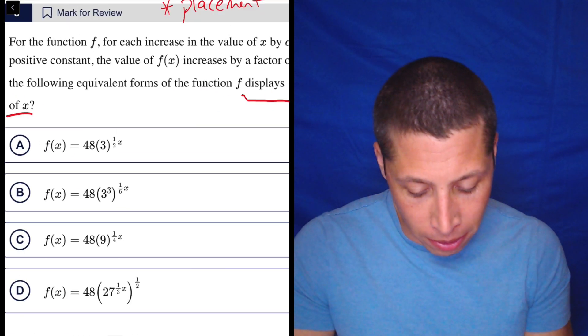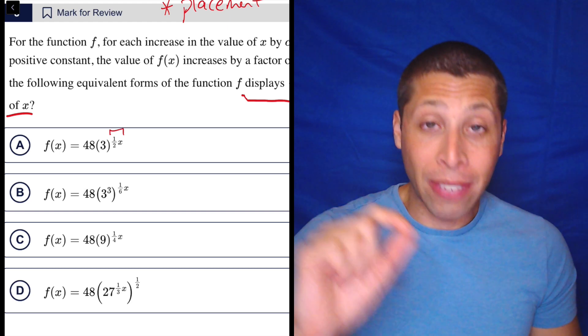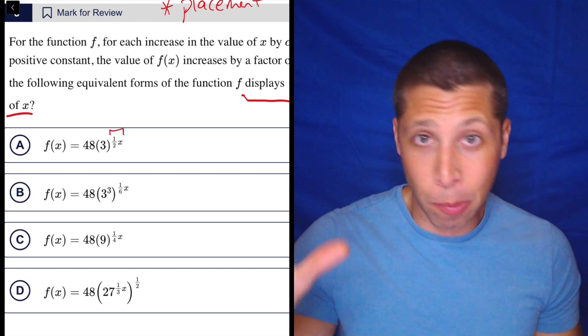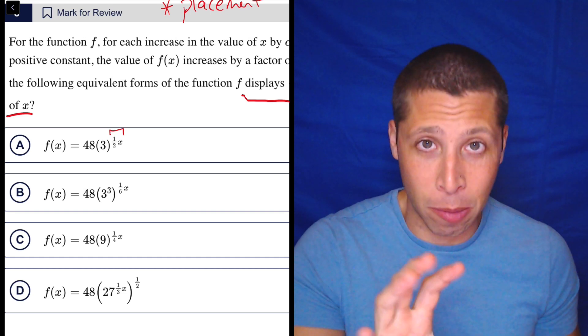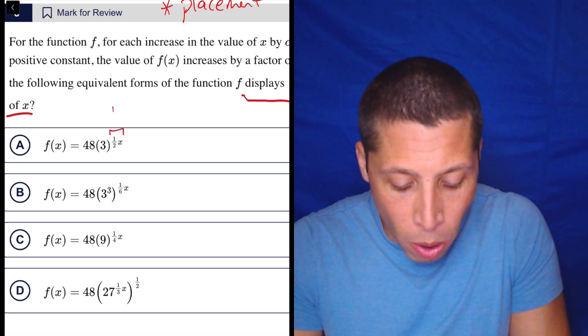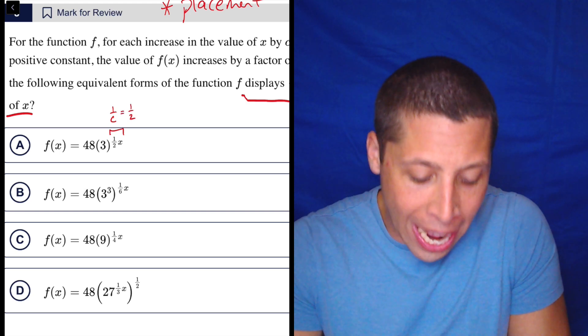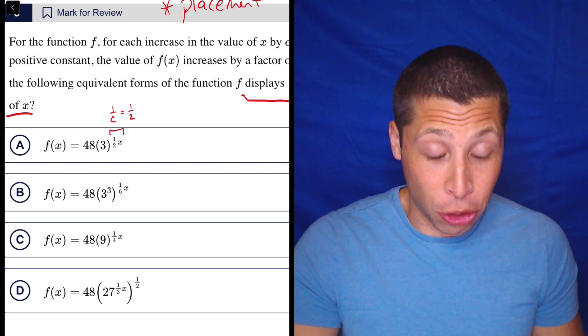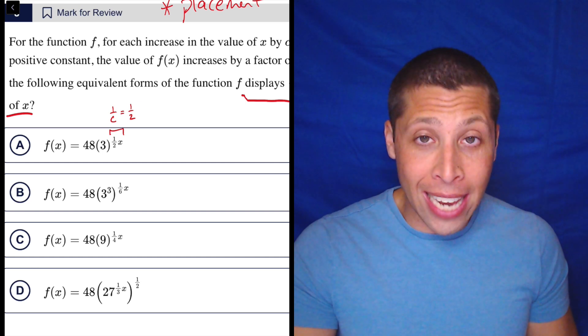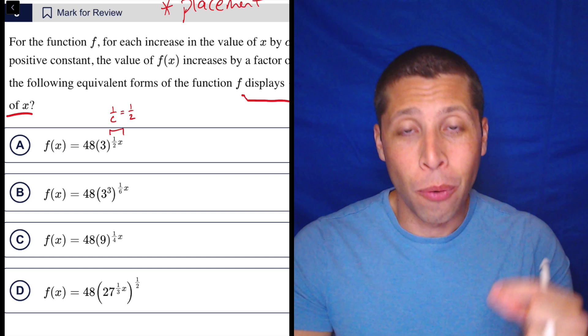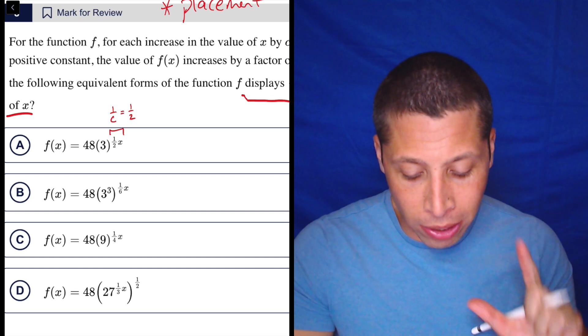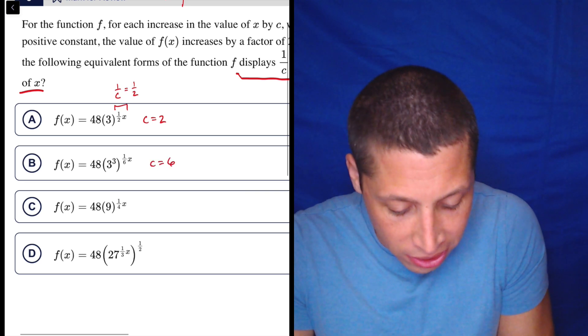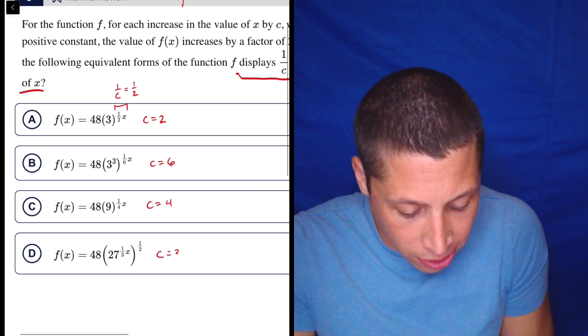They're telling us that it already displays 1/c as a coefficient of x, which means there's going to be an x in each of these equations. And the thing right in front of it that's attached to it from multiplication is going to tell me what c is. So let's zoom in on this first choice. We have an x, the only x in that equation, and then 1/2 is the coefficient. It's an exponent, but it's 1/2 times x in that exponent, so it's fine. So that means the 1/c is 1 over 2 for this choice.